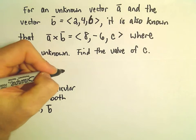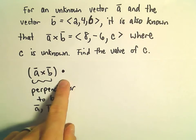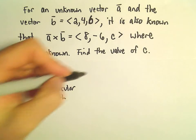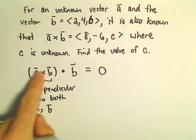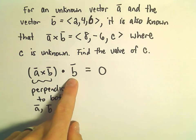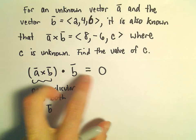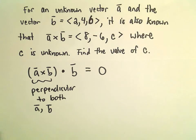Recall if we take the dot product of two vectors that are perpendicular, the dot product has to equal 0. Again, this new cross product is going to be perpendicular to vector B. Their dot product is going to be 0. We're going to use that to create a little equation that we can solve.